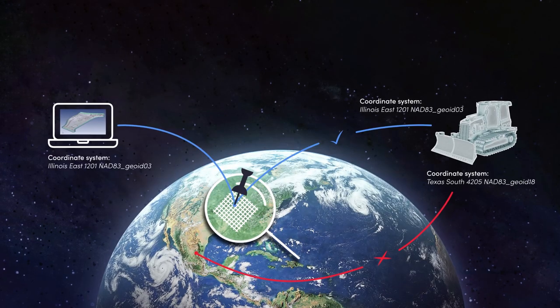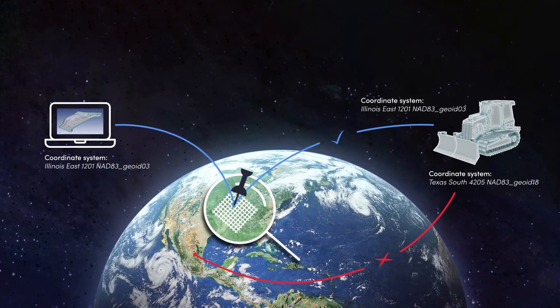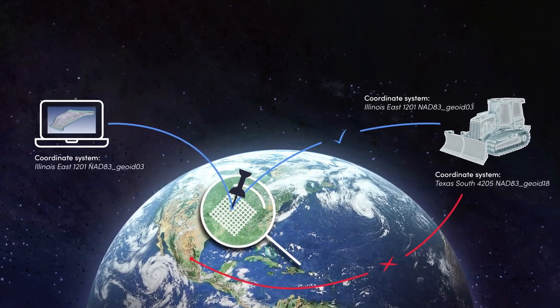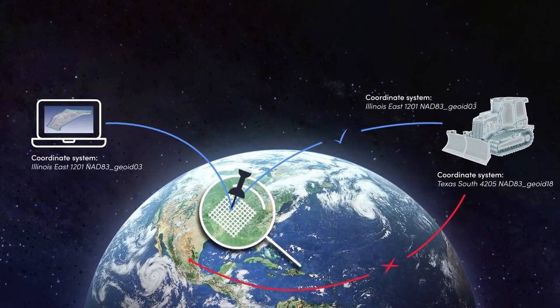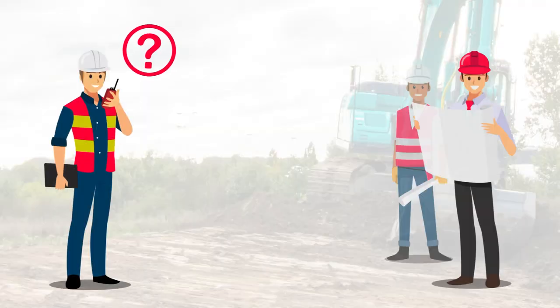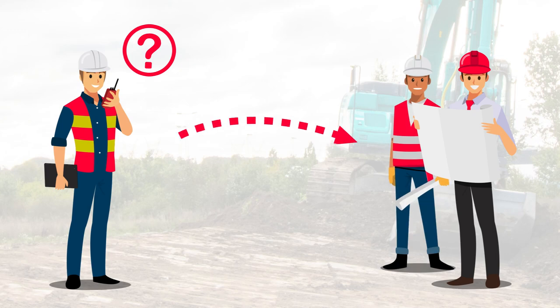It is critical to use the right coordinate system when working with GNSS positioning. If you are in doubt about which one to use, ask your foreman or surveyor.